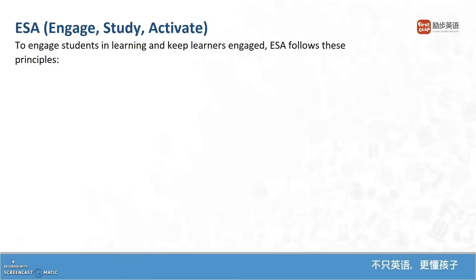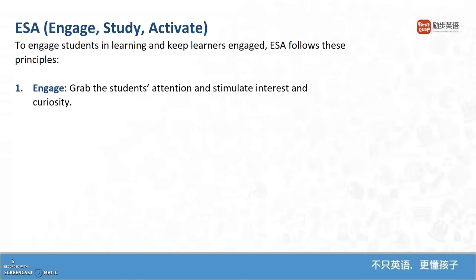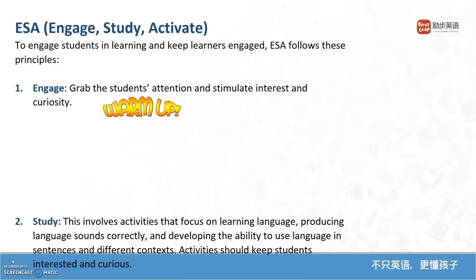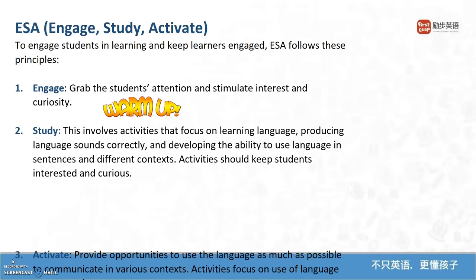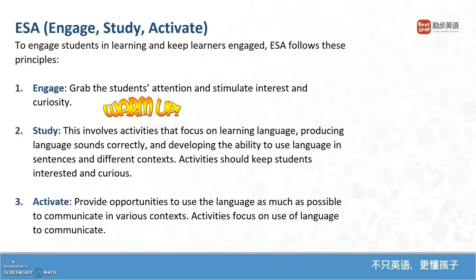These are some ways teachers can support the PPP model. Next, we will consider ESA — Engage, Study, and Activate. ESA is similar to PPP in many ways. It is a way of ordering instruction or showing the way instruction will be handled. First, the goal is to engage the students, get them interested. Next, students need to study the topic, learn it, and practice it. And third, the students activate their learning by continuing to practice and engage in activities that help them to use and remember the language.